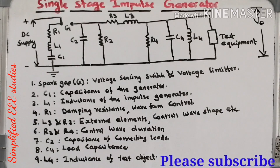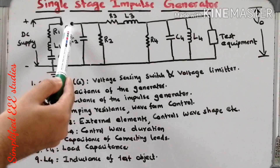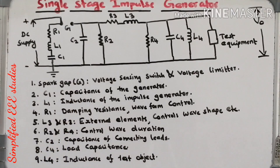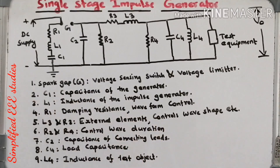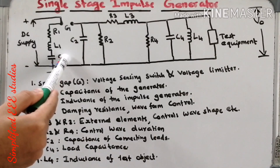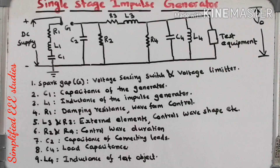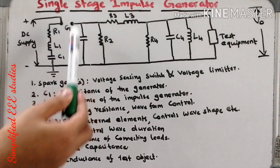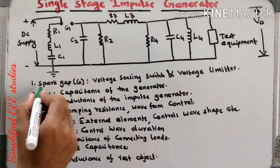Now let us familiarize with individual components. First and foremost, I would like to introduce the sphere gap. This is a sphere gap. The duty of sphere gap is that it is a voltage sensing switch. It acts as a switch and we can say it is a voltage limiter. It ensures how long the capacitor charges. Once capacitor C1 gets charged completely, the sphere gap G is going to conduct, then it provides a discharging path. That is the duty of the spark gap or sphere gap.